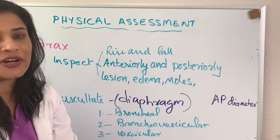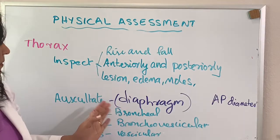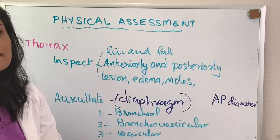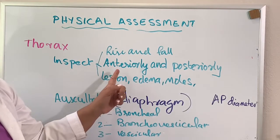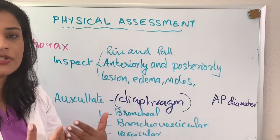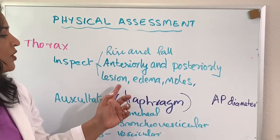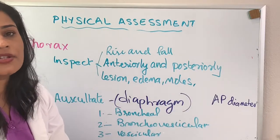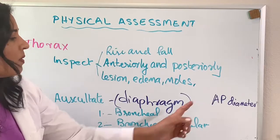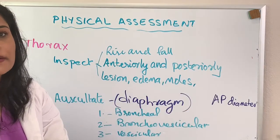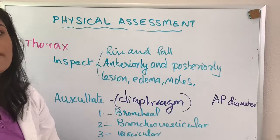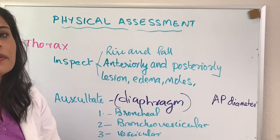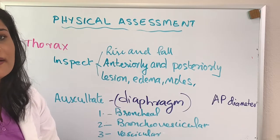Physical examination of the thorax includes inspection and auscultation. You first inspect the chest rise and fall, then look at the anterior and posterior chest for any lesion, edema, or moles. You can also check the anteroposterior diameter, called the AP diameter. Normally we use the diaphragm of the stethoscope. There are three lung sounds: bronchial, bronchovesicular, and vesicular.